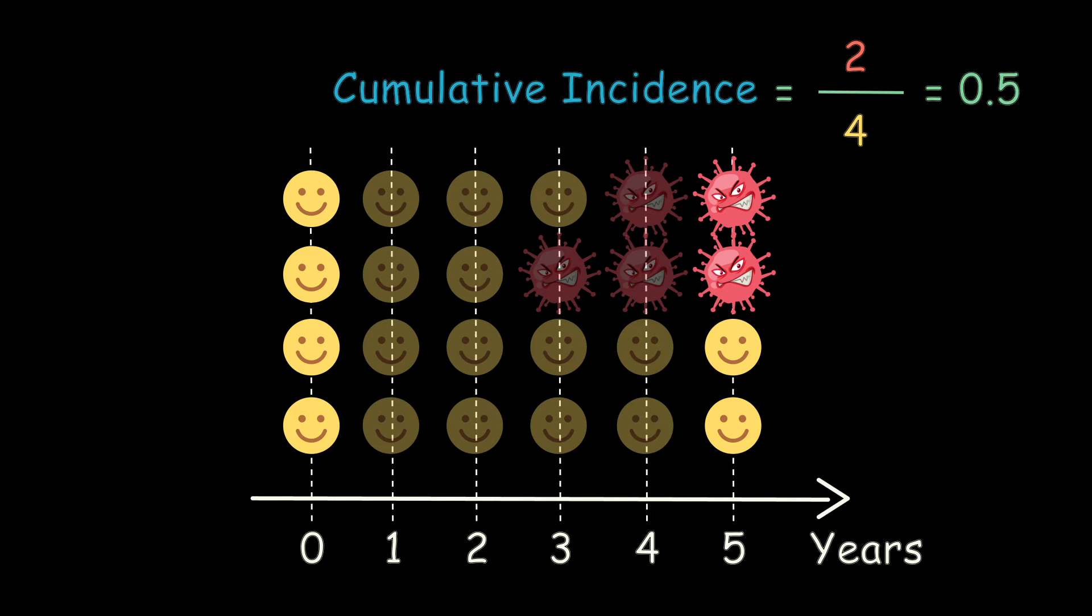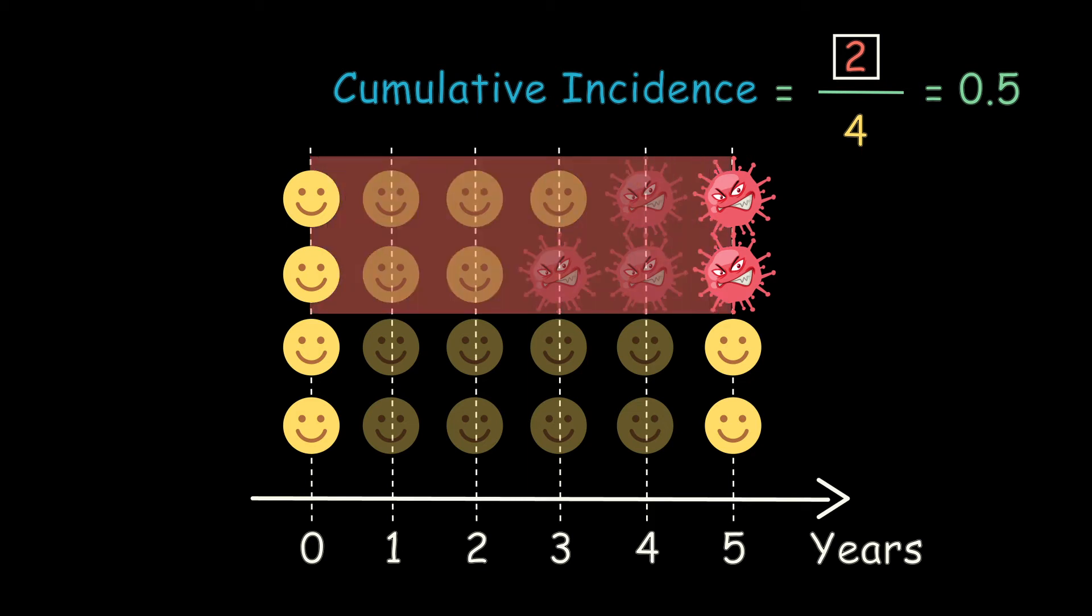So we get 0.5 or 50%. The numerator is the number of individuals who did not have the disease initially, but developed it sometime during the five-year period. Note that the specific time when these individuals develop the disease does not matter.